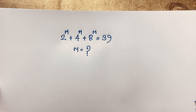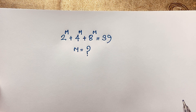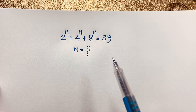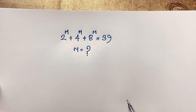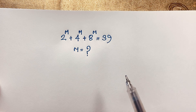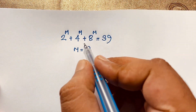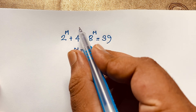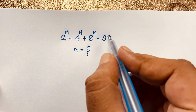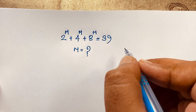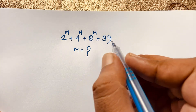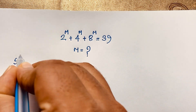Hello everyone, welcome to Rasha's classroom. Today we have solved a nice math formula question. I titled it as the Harvard University intern's exam question, but it is not actually a Harvard University exam question. It is an easy math. The question is: 2 to the power m plus 4 to the power m plus 8 to the power m is equal to 39. What is m? How to solve this interesting exponential math question?